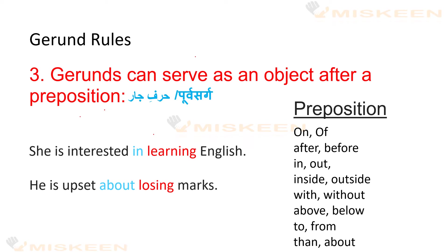What are the prepositions? Here we have a list of common prepositions: in, out, on, off, from, etc. She is interested in learning English — here, 'in' is our preposition, 'learning' is our gerund, and this is our object. Second sentence: He is upset about losing marks — here, 'losing' is our gerund and 'about' is our preposition.